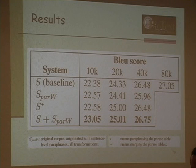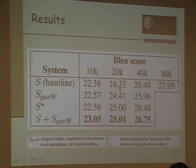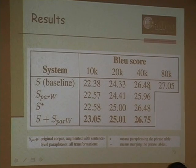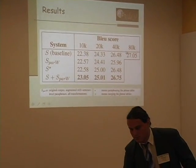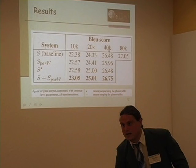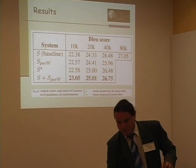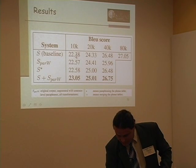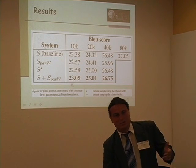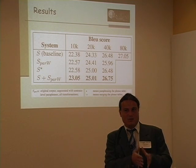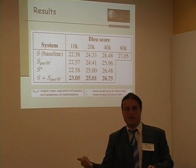Across different training corpus sizes (10K to 80K sentences), the improvement from paraphrasing shrinks as more data is added — from 22.38 to 23.05 at 10K, and gains diminish at larger sizes. This is consistent with expectations: paraphrasing helps most when training data is limited, giving roughly 33-50% of the gain you'd get from doubling the training data. For less-resourced language pairs with 30,000-50,000 sentences, you should expect more improvement.